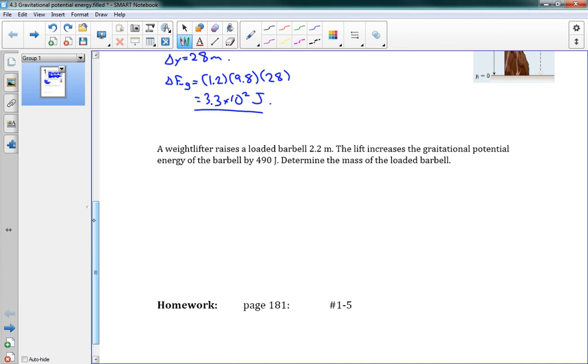It's really that simple. We'll do another problem using this equation, and then I'll just leave you to do problems number 1 to 5 on the homework there. So this one says a weightlifter raises a loaded barbell 2.2 meters. The lift increases the gravitational potential energy of the barbell by 490 joules. Determine the mass of the loaded barbell.